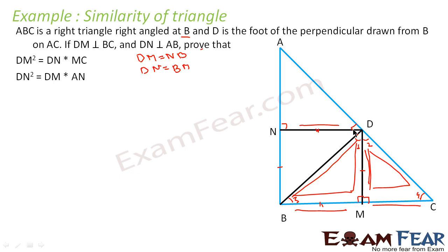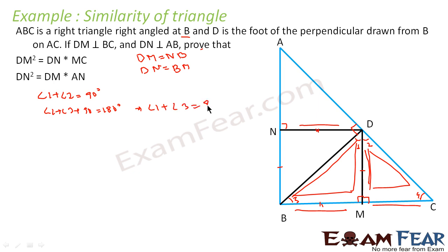Angle 1 plus angle 2 equals 90 degrees. Similarly, angle 1 plus angle 3 is also 90 degrees — because the sum of angles in a triangle is 180, and one angle is 90. Comparing these two equations, angle 1 plus 2 equals 90 and angle 1 plus 3 equals 90, we can say that angle 2 is equal to angle 3. This is our first result.